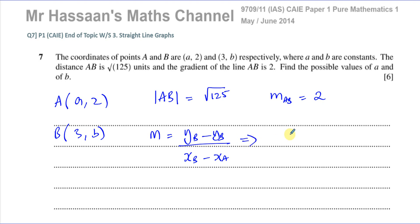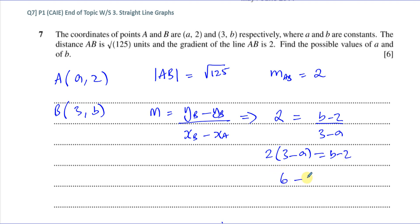So I know that the gradient 2 is equal to the change in the y coordinates, which is b minus 2, over the change in the x coordinates, which is 3 minus a. It must start from the same place. I can't say b minus 2 over a minus 3. Now I can rearrange that. I can multiply both sides by 3 minus a. So 2 times (3 minus a) equals b minus 2. So this gives me one equation. I can just simplify it. 6 minus 2a equals b minus 2. So if I add 2 to both sides, 8 minus 2a equals b. So I have one equation: b equals 8 minus 2a.